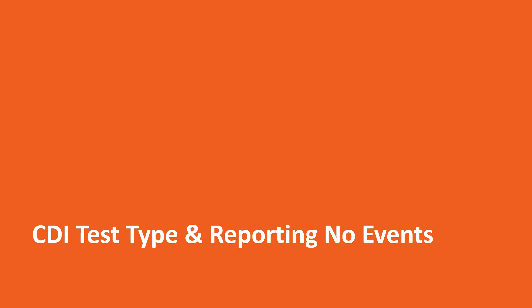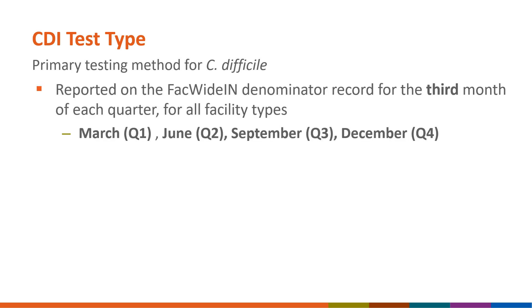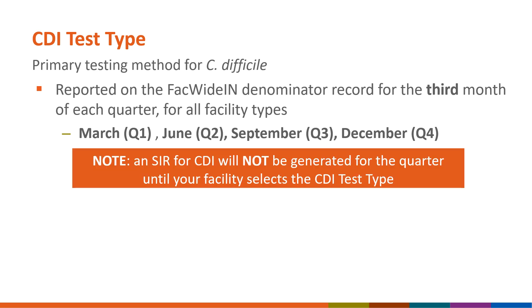This final section will cover CDI test type and reporting no events on the FACWIDEIN monthly denominator, and is applicable to all facility types. Another element captured on the monthly denominator form is the CDI test type, which is the primary testing method used for C. difficile by your facility's laboratory. CDI test type is collected on the FACWIDEIN denominator record for the third month of each quarter. Note that an SIR for CDI will not be generated for the quarter until your facility has selected the CDI test type for that quarter.